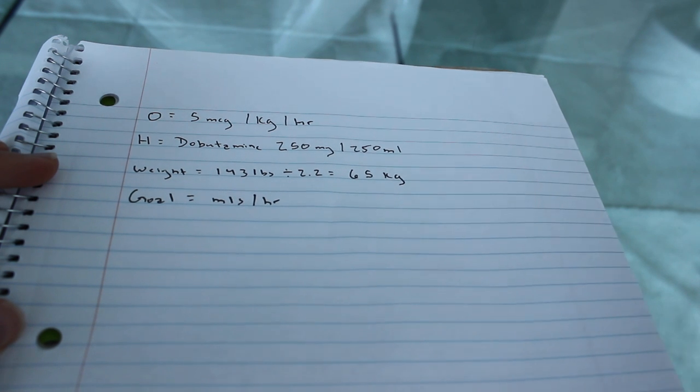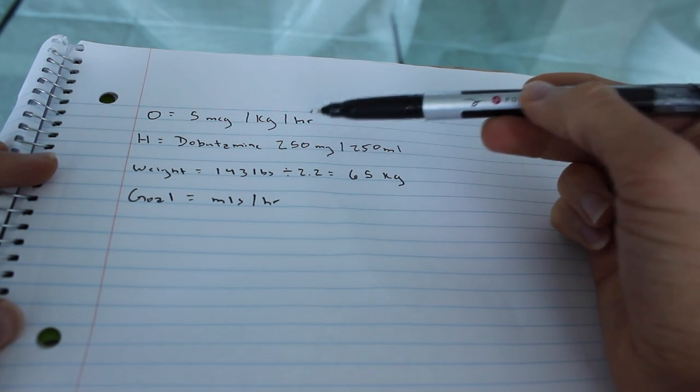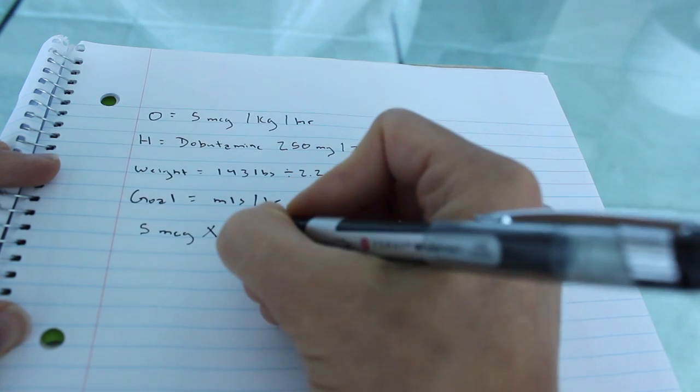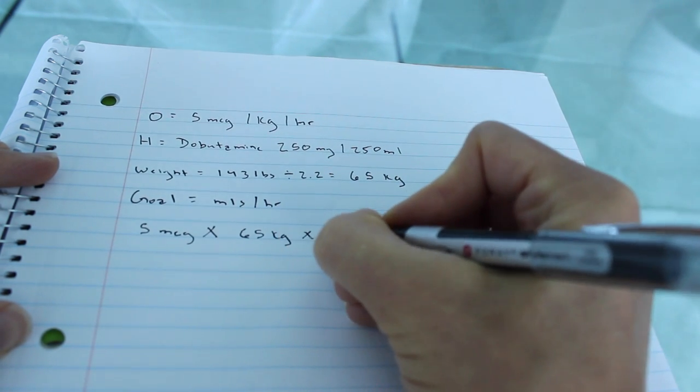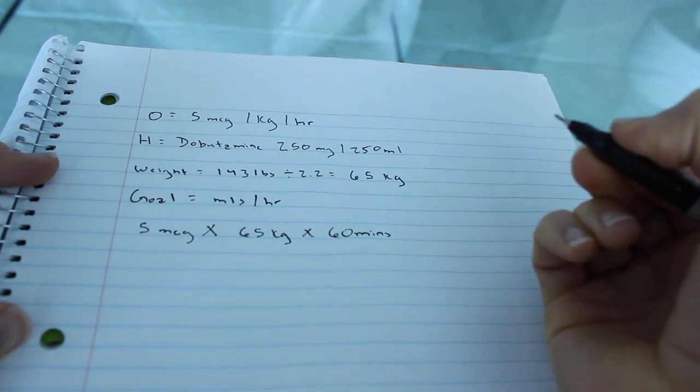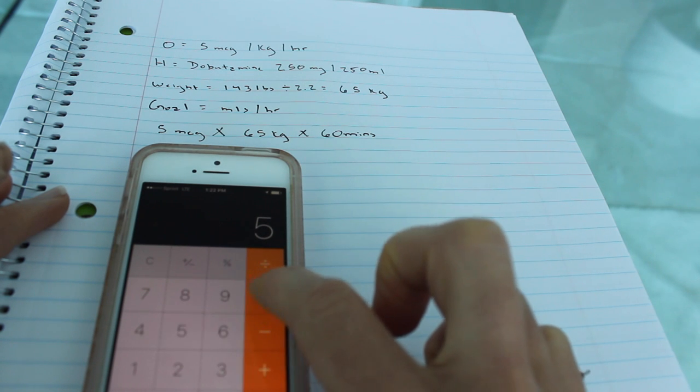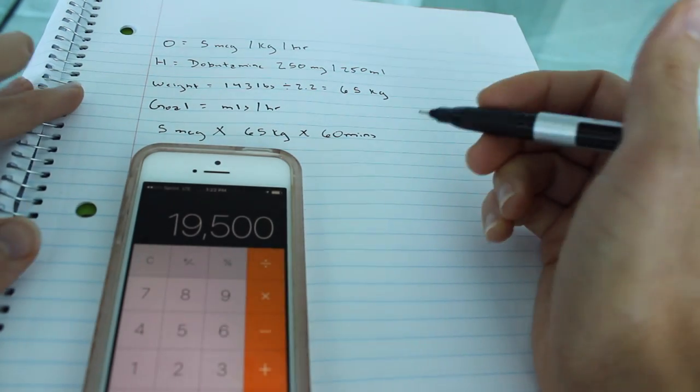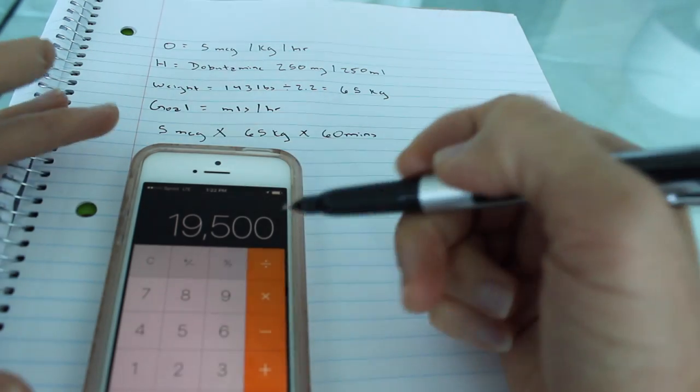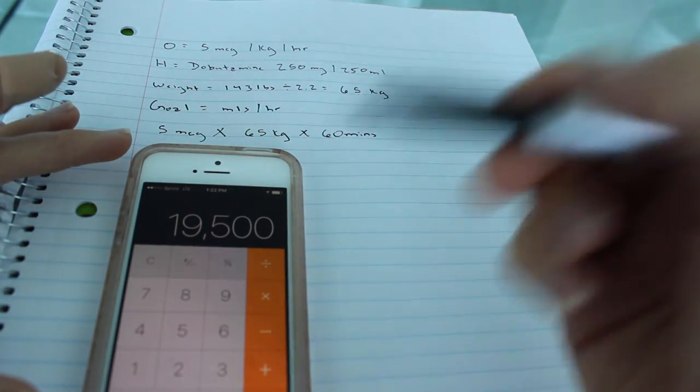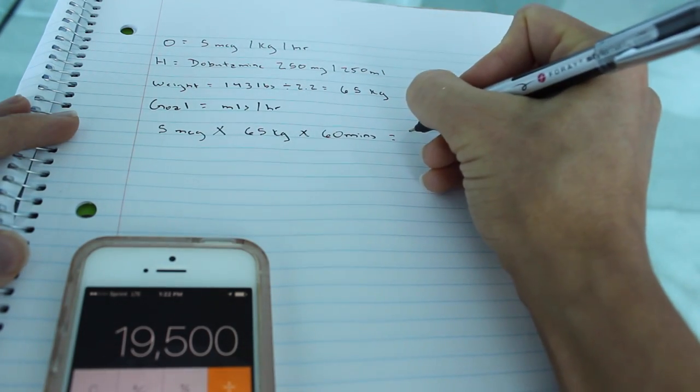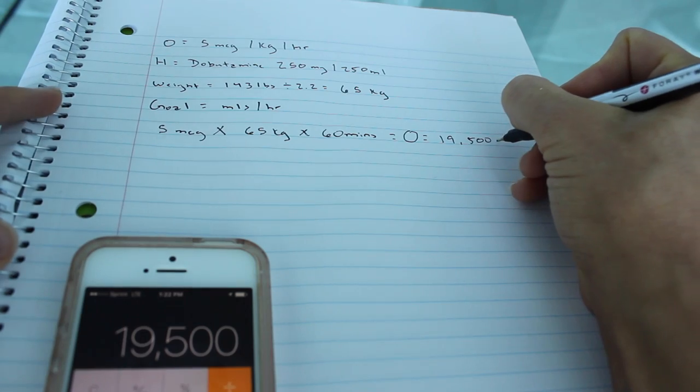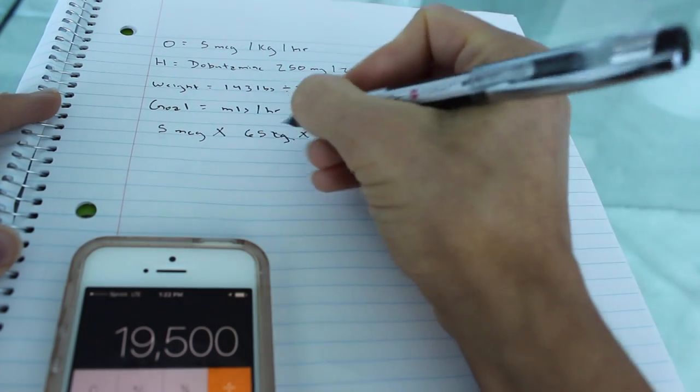Okay, so the first thing that we have to do is figure out what our hourly rate is. We're going to take 5 micrograms times 65 kilograms, and we're going to times that by 60 minutes, because there's 60 minutes in an hour. So 5 times 65 times 60 equals 19,500. So this is our actual official order. This is going to be 19,500 per hour. But what is it? It's micrograms. We're going to take off this kilogram. We don't need it anymore.